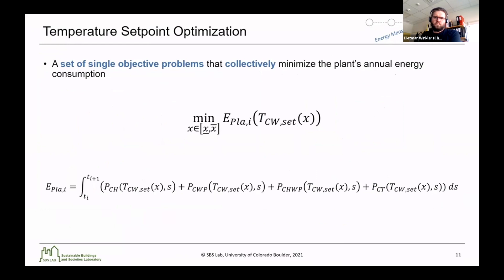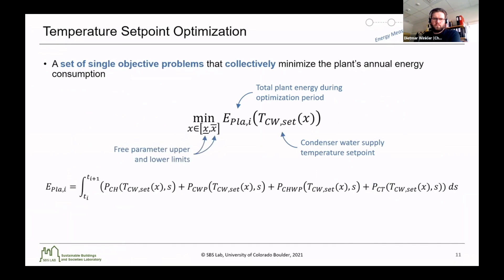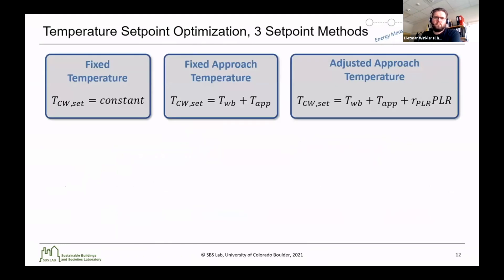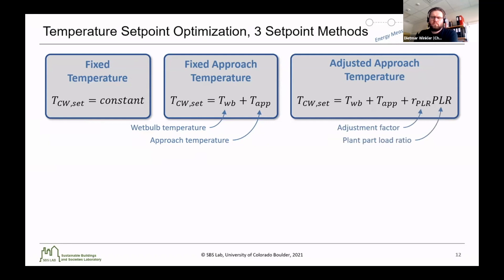For the temperature setpoint optimization, we formulated a set of single-objective problems that collectively minimize the plant's annual energy consumption. We looked to minimize the total plant energy during the optimization period by adjusting the condenser water supply temperature setpoint, constrained by the free parameter upper and lower limits. To calculate total plant energy, we integrated over the optimization time horizon the power of the chillers, the condenser water pumps, the chilled water pumps, and the cooling towers. We formulated three different setpoint methods: first, a fixed temperature where the condenser water supply temperature setpoint is a constant value; next, a fixed approach temperature where the setpoint is offset from the wet bulb temperature by a constant approach temperature; and thirdly, an adjusted approach temperature where the approach relative to the wet bulb is adjusted by some adjustment factor R relative to the plant's workload ratio.